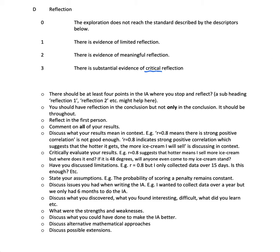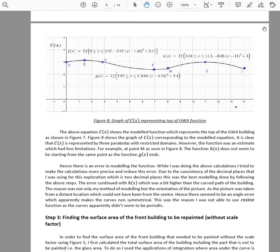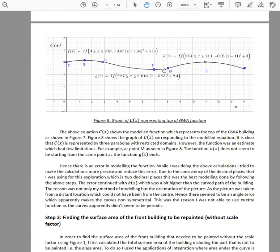This is definitely one criterion where you can get three out of three — certainly two, but you should be able to get three out of three. Let me show you two examples. The first is a school-area IA. The student says: 'It is clear that c(x) is represented by three piecewise functions with restricted domains; however, the function was an estimate which had a few limitations. For example, as seen in Figure 8, the function h(x) does not seem to start from the same point where g(x) ends.'